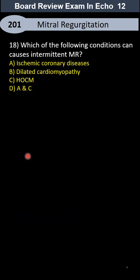Question 18: Which of the following conditions can cause intermittent MR? Intermittent MR means that based on the situation, sometimes when we scan the patient they have MR at that moment, and another time they don't have MR. We call it intermittent MR.